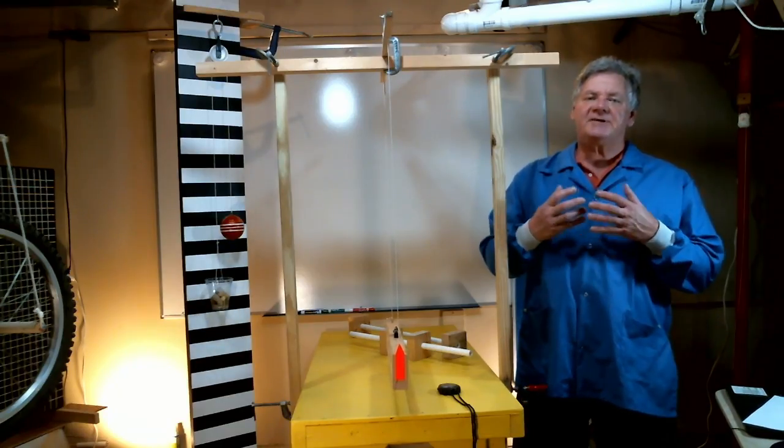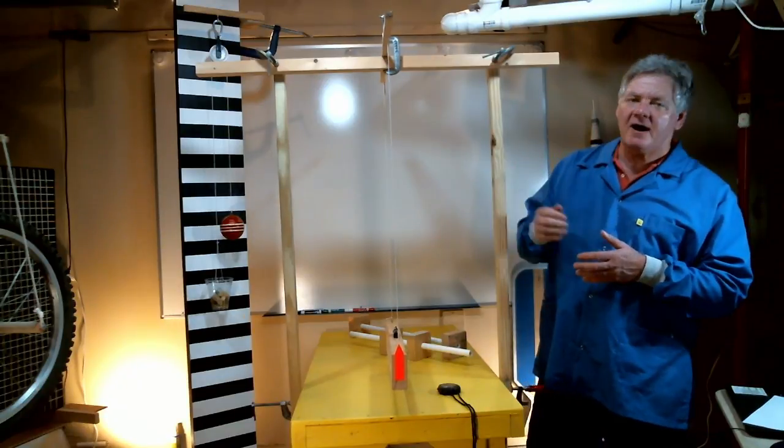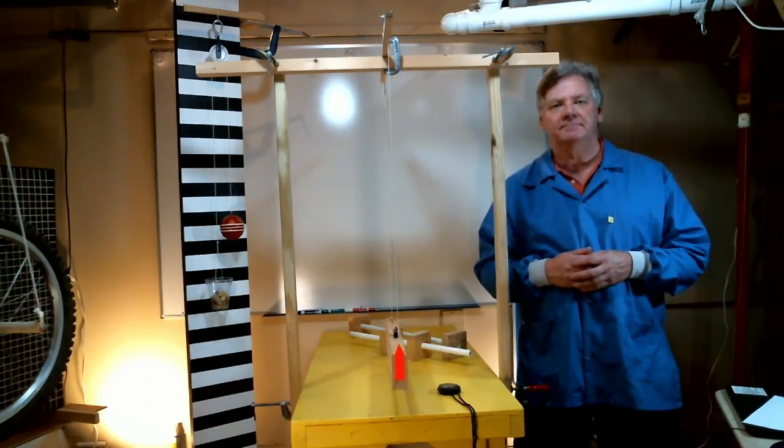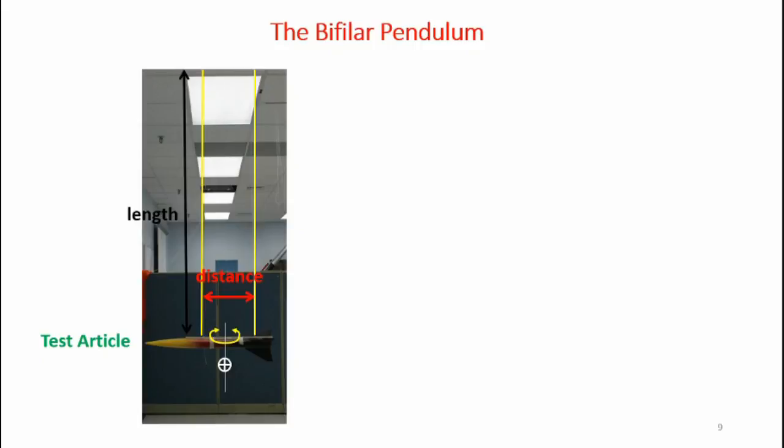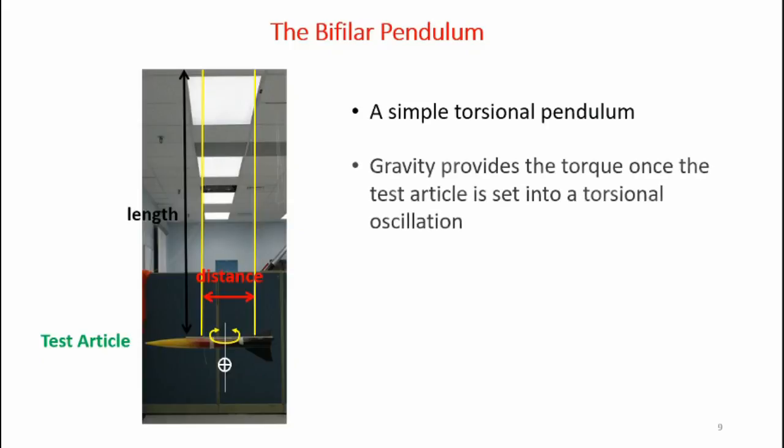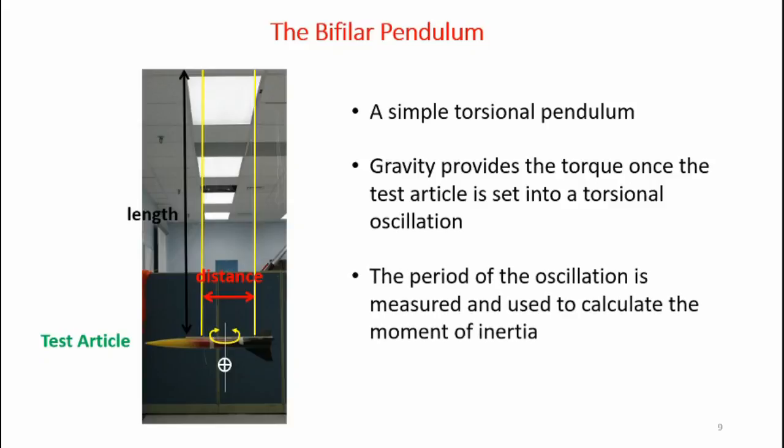Now let's take a look at how I can actually measure the MOI using my simple bifilar torsional pendulum. Here's what a simple bifilar pendulum looks like. I have two strings attached to the ceiling in this case and they go down and attach to my test article. Now a bifilar pendulum is a simple torsional pendulum. Now gravity provides a torque once the test article is set into a torsional oscillation twisting back and forth.